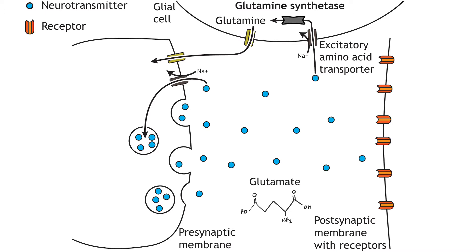Within glial cells, glutamate is converted into glutamine by glutamine synthetase. Glutamine is then transported out of the glial cell and back into the presynaptic terminal for use in future glutamate synthesis. If glutamate is transported back into the presynaptic terminal, it can be repackaged in synaptic vesicles.